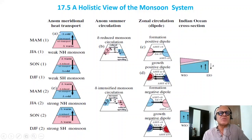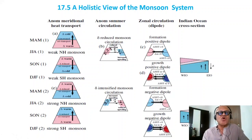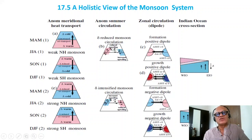Starting with a cold northern hemisphere and warm southern hemisphere anomaly — say coming out of a previous year's strong monsoon — that's going to give you reduced monsoon circulation. You then have reduced southward Ekman transport, resulting in a weak northern hemisphere monsoon. That weak monsoon circulation is going to give you reduced upwelling on the west, giving warming there and increased upwelling in the east. This produces a zonal temperature gradient as well as an associated zonal wind signature: a delta U that is negative.